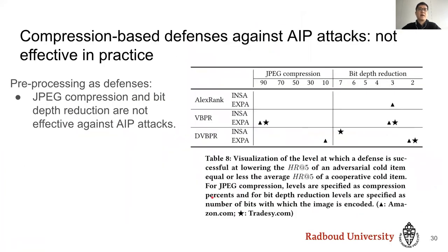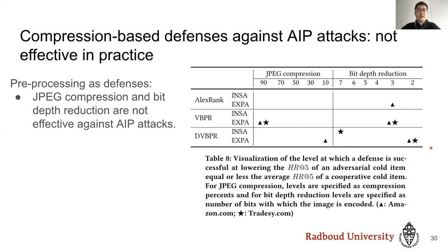Finally, looking at compression-based defenses against AIP: we would expect these to be helpful. For VBPR, stars and triangles representing Etsy and Amazon show some effectiveness, but for other systems, very high compression ratios or low bit depths are required before the attack loses effectiveness.